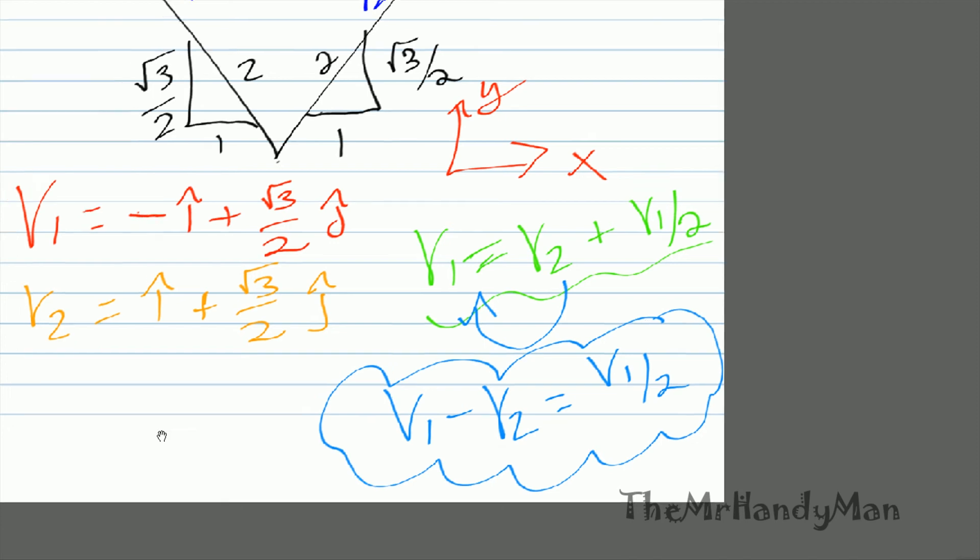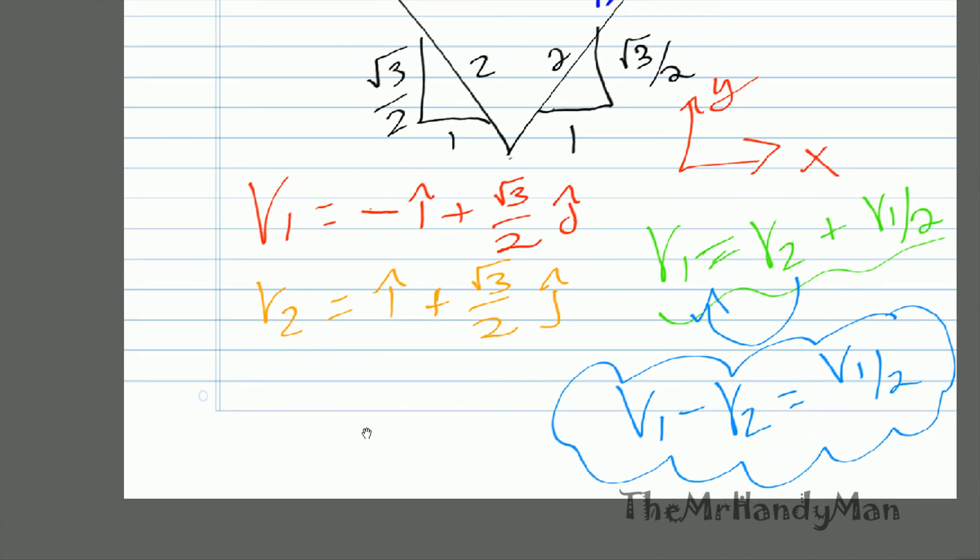We have v1 and v2 right over here. So what's v1 minus v2? v1 is negative i plus √3 over 2 j.